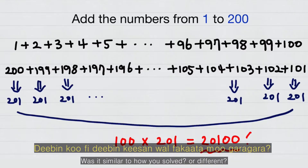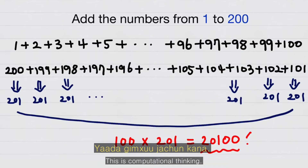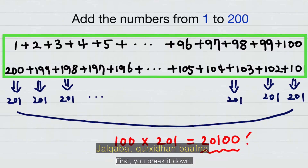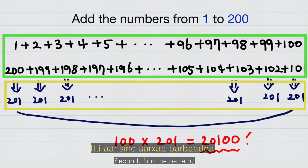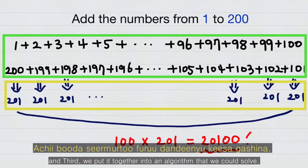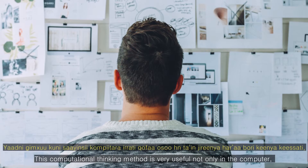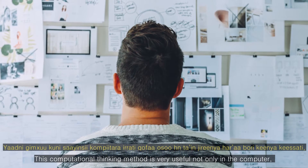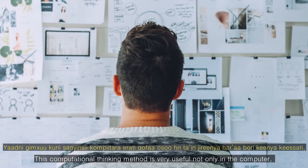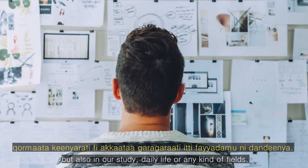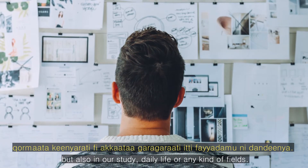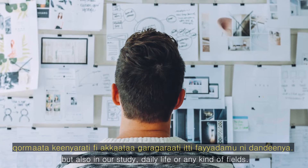Was the way you solved it similar or different? This is computational thinking. First, you break the problem down. Second, you find a pattern. And third, you put it together into an algorithm to solve it. This computational thinking method is very useful not only with computers, but also in our studies, daily lives, and any kind of field.